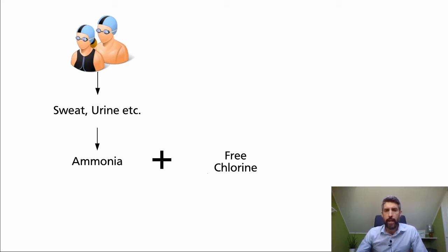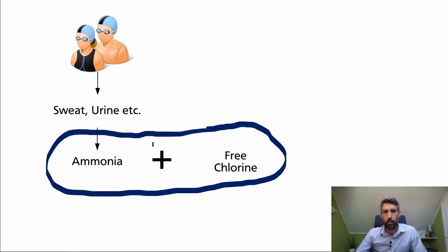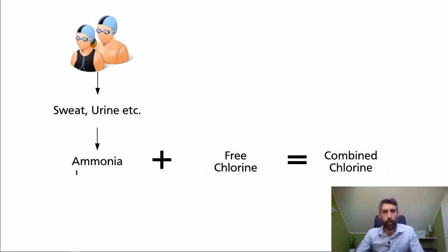Free because it's free, it's available to act as a disinfectant and kill germs. It's measured with a DPD-1 tablet. And what happens is that the free chlorine and the ammonia are going to start mixing together because they're both present in the pool water. And what happens as a result is there are byproducts that develop as a result of this reaction between ammonia and free chlorine. And this reaction between ammonia and free chlorine produces something that we refer to as combined chlorine. So ammonia plus free chlorine equals combined chlorine.